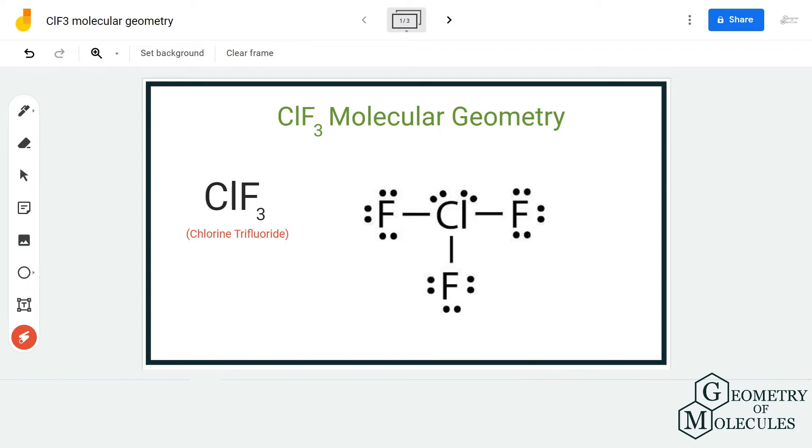This is the Lewis structure of ClF3 in which chlorine atom is forming bonds with three fluorine atoms and it also has two lone pairs of electrons because it can have expanded octets. Now if you look at its shape